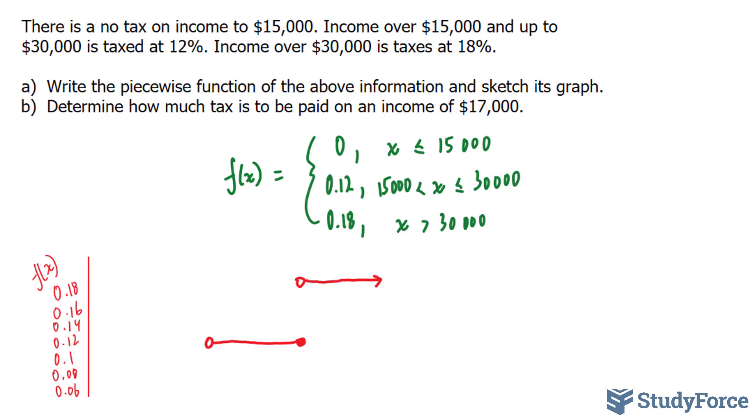This means that only $2,000 of this $17,000 will be taxed. Because only $2,000, $17,000 minus $15,000 is over $15,000. So let's show that $17,000 minus $15,000 gives us a total of $2,000.